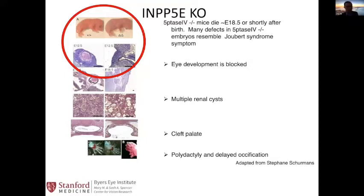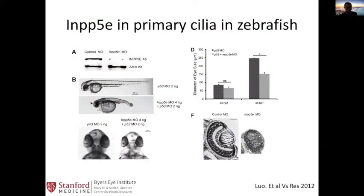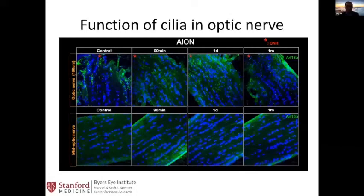Back in 2012, the lab made a zebrafish model injecting INPP5E morpholino in embryos and showed this affects eye development, which could be rescued by gene rescue. Currently they are working on the function of cilia in the optic nerve, in collaboration with Dr. Liao's laboratory, which generates the AION model. They are examining cilia function and structure in response to injury. The top image shows the optic nerve head and the bottom shows the mid optic nerve section.